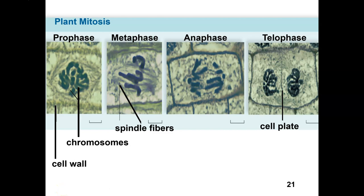We're still going through those same phases: prophase, metaphase, anaphase, and telophase. In prophase, the nuclear envelope is still breaking down, chromosomes are condensing, and spindle fibers are starting to form from the centrosomes. In metaphase, the chromosomes line up at the metaphyseal plate, and spindle fibers are still attaching and moving those chromosomes around.